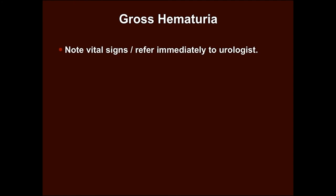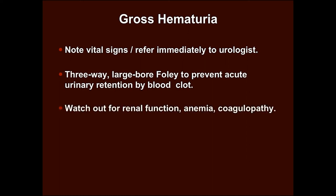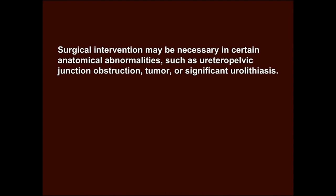If there is gross hematuria, note vital signs and refer immediately to urology. A 3-way large-bore Foley's catheter can be inserted to prevent acute urinary retention by blood clots. Watch out for renal function, anemia and coagulopathy. Surgical intervention may be necessary in certain anatomical abnormalities such as ureteropelvic junction obstruction, tumor or significant urolithiasis. For painless gross hematuria, proceed for tumor workup.